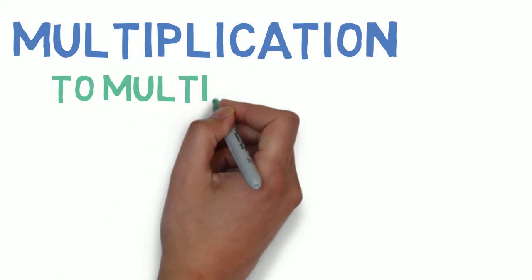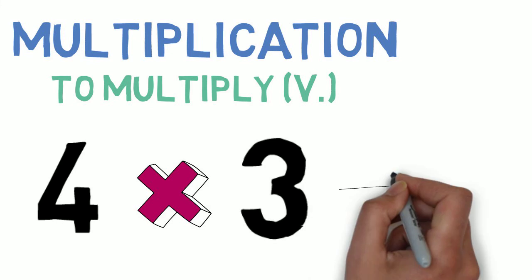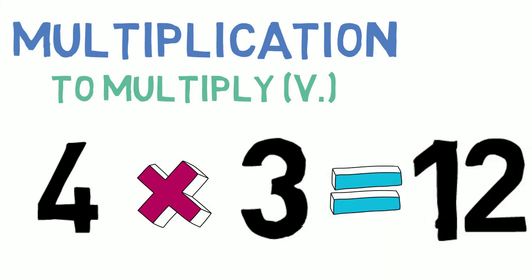Multiplication is when you multiply one number by another number. For example, 4 times 3 equals 12. Or, if I multiply 4 by 3, I get 12.